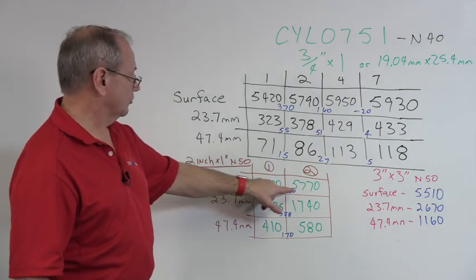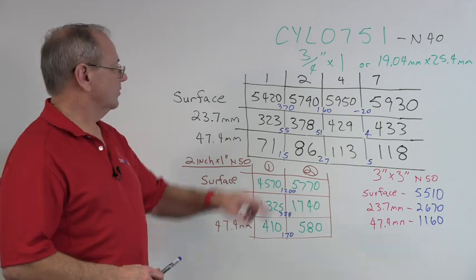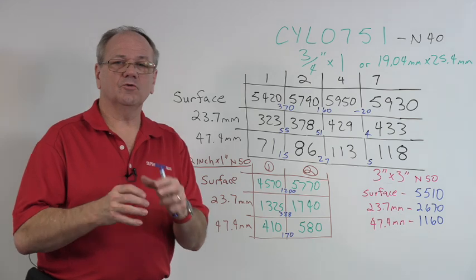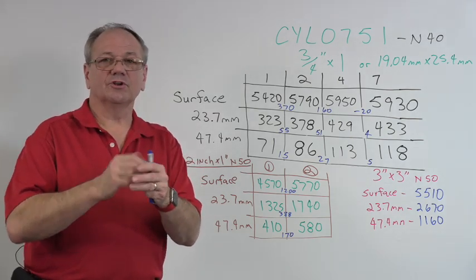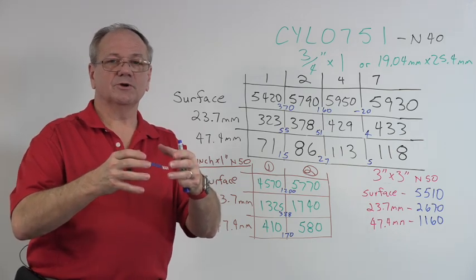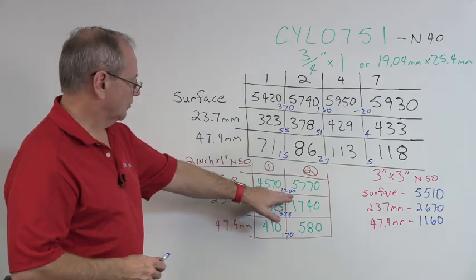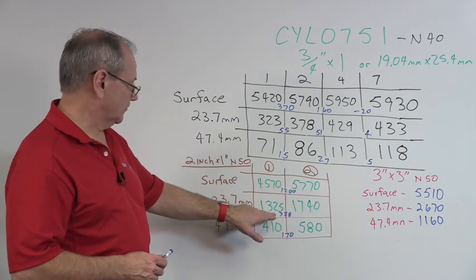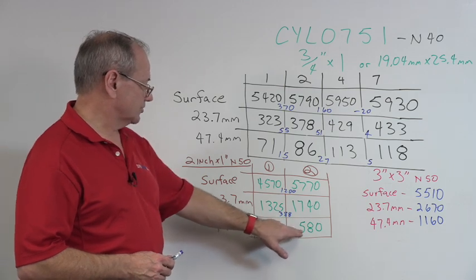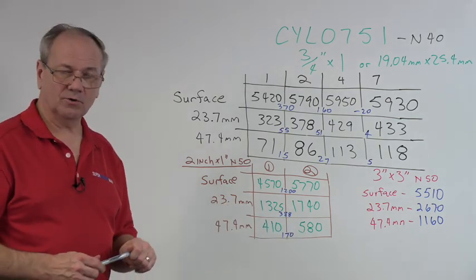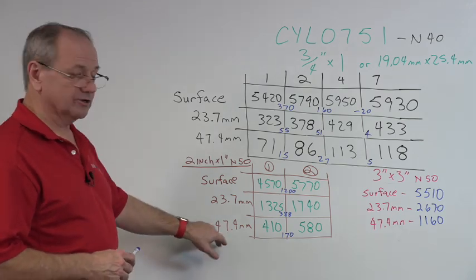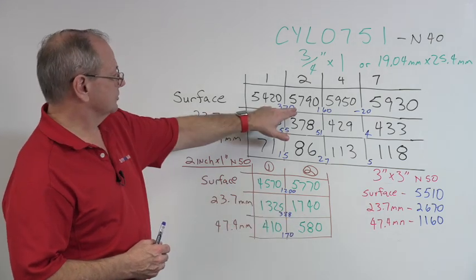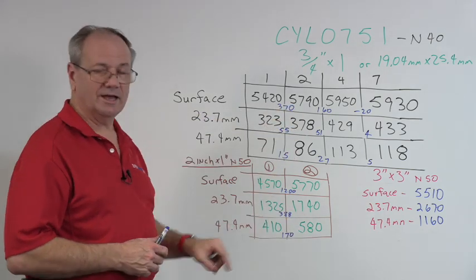When we doubled the two-inch diameter magnet, I picked up 1200 gauss. When I doubled the smaller one, I only picked up 370. So you can see that if you're going to really increase the flux over distance, you have to not only get longer, but you have to get bigger in diameter. We go from 5770 surface gauss to 1740 at 23.7mm, and 410 to 580 at 47.4mm. We're nearly two inches away from the surface and we're still reading 580 gauss.